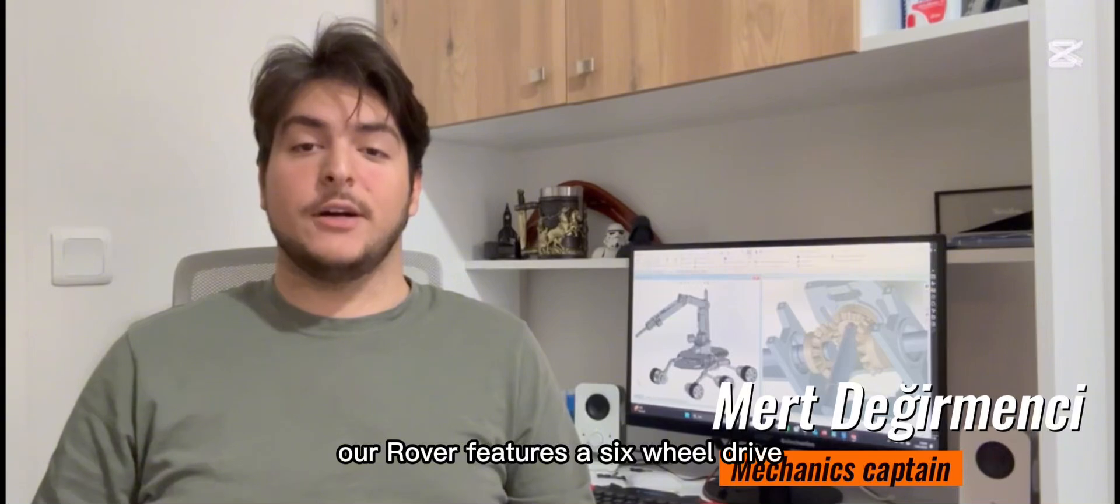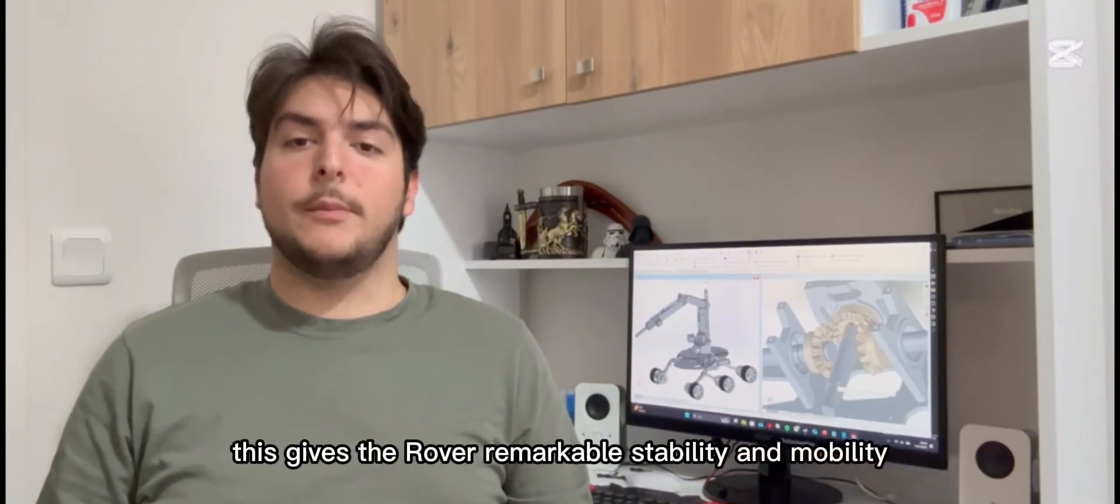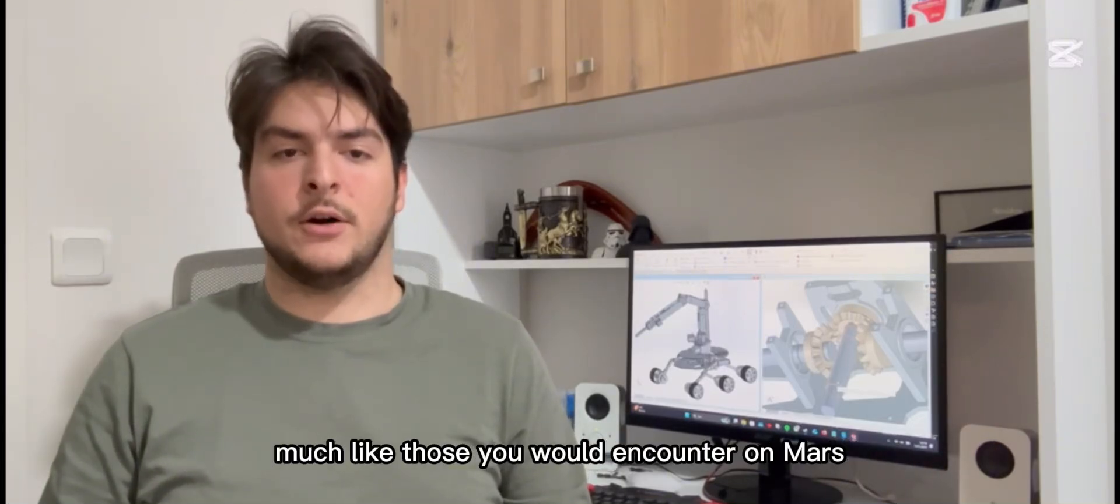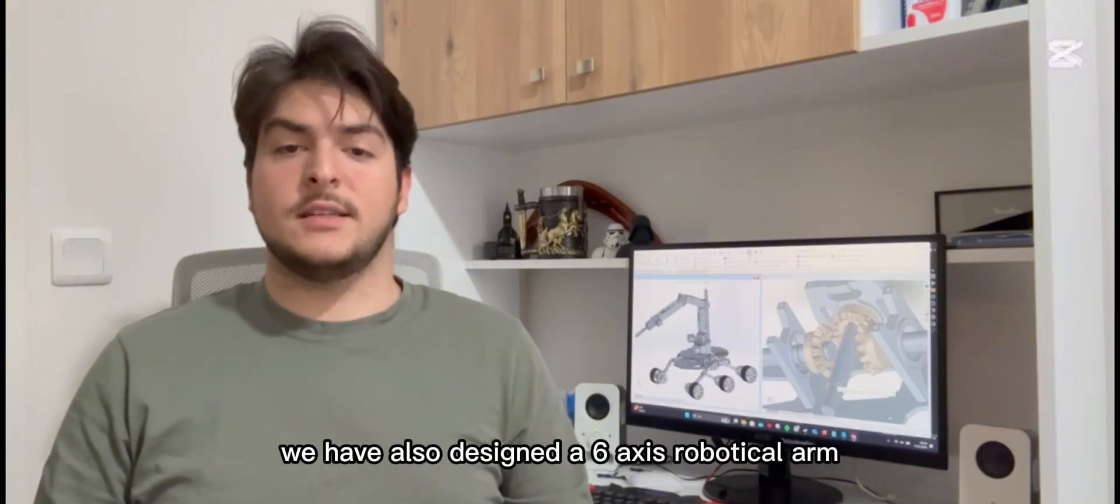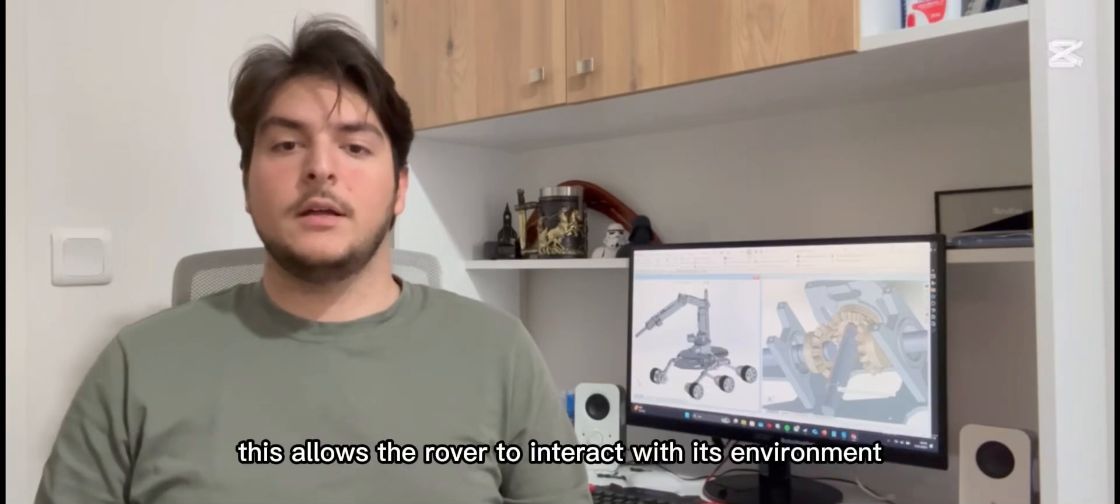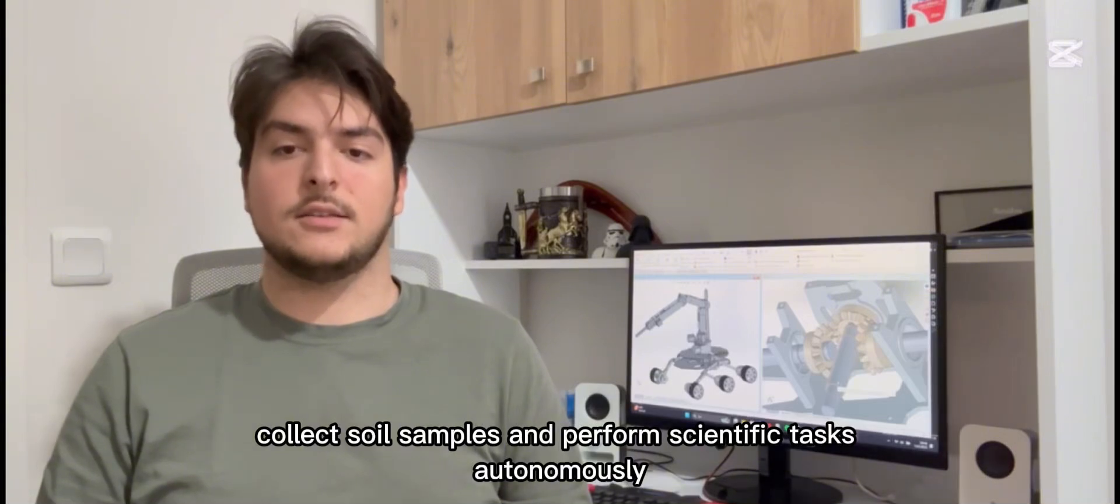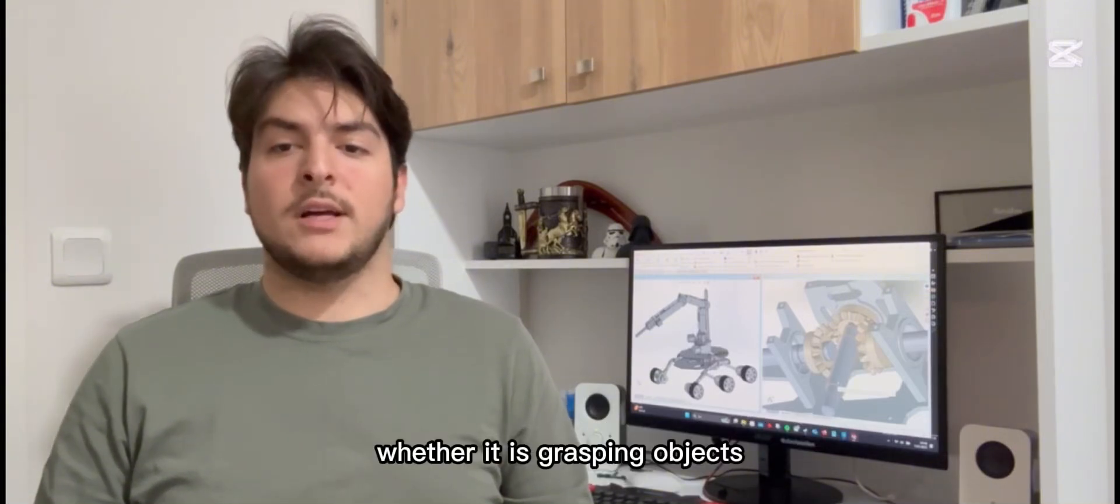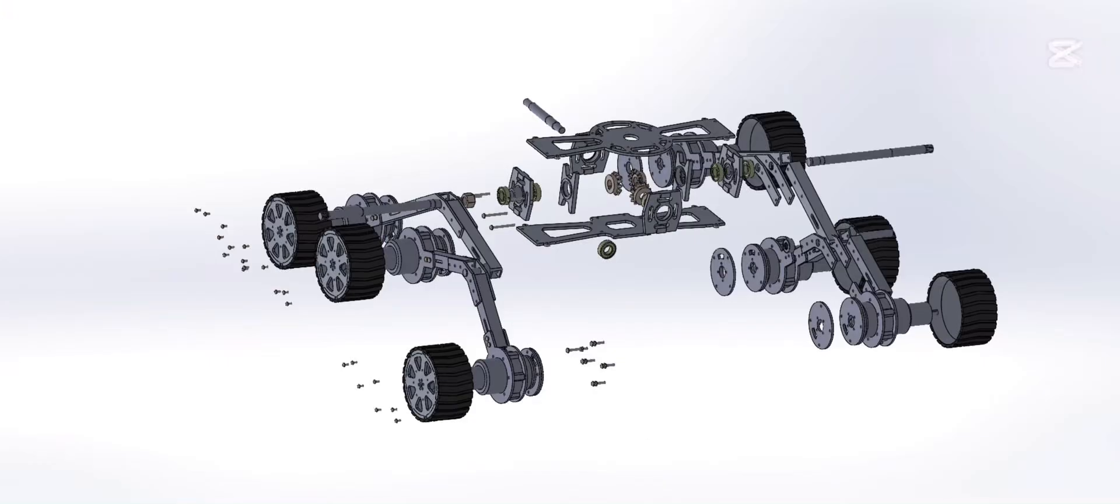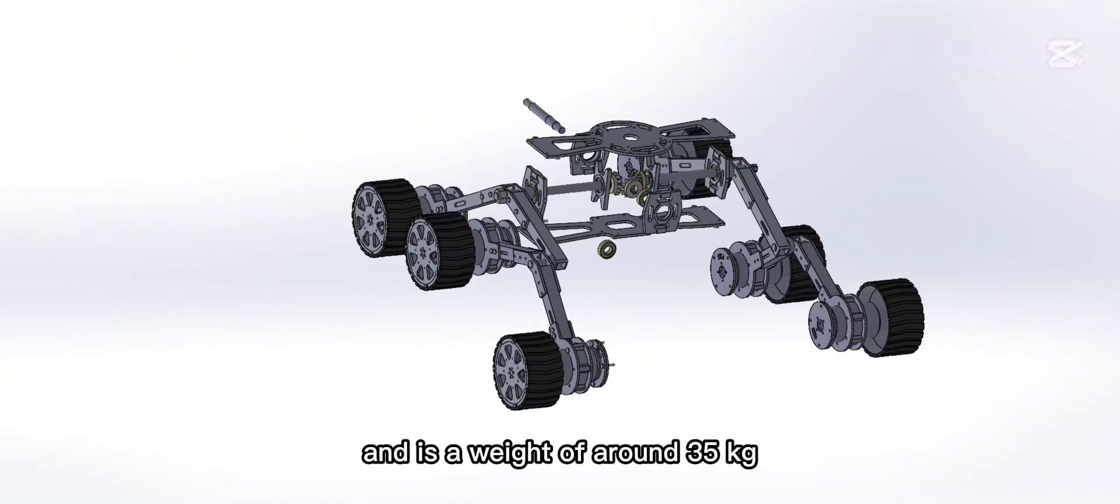Our rover features a six wheel drive rocker boogie suspension system crafted entirely from aluminium. This gives the rover remarkable stability and mobility, allowing it to navigate over rough terrain and obstacles, much like those you would encounter on Mars. Our movement system is 97 x 105 x 38 cm in dimensions and has a weight of around 35 kg.